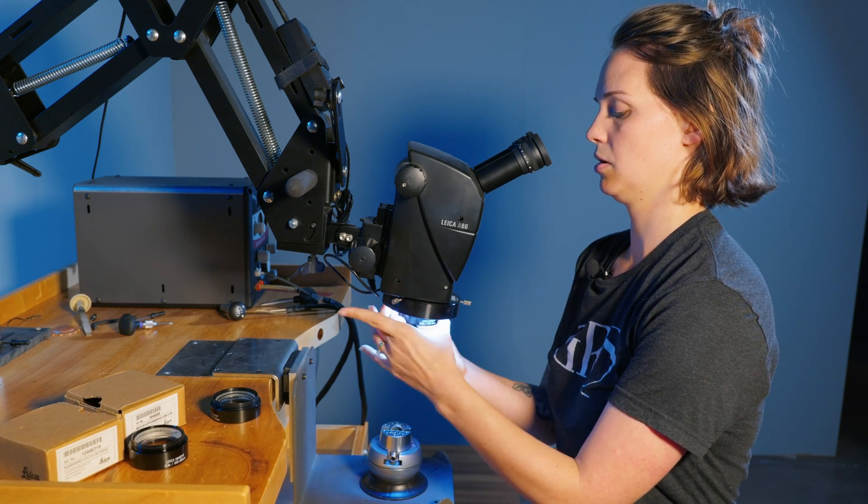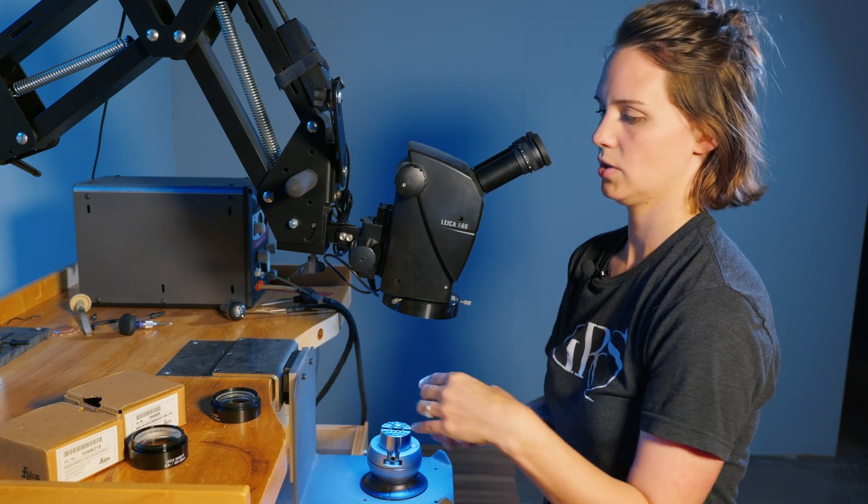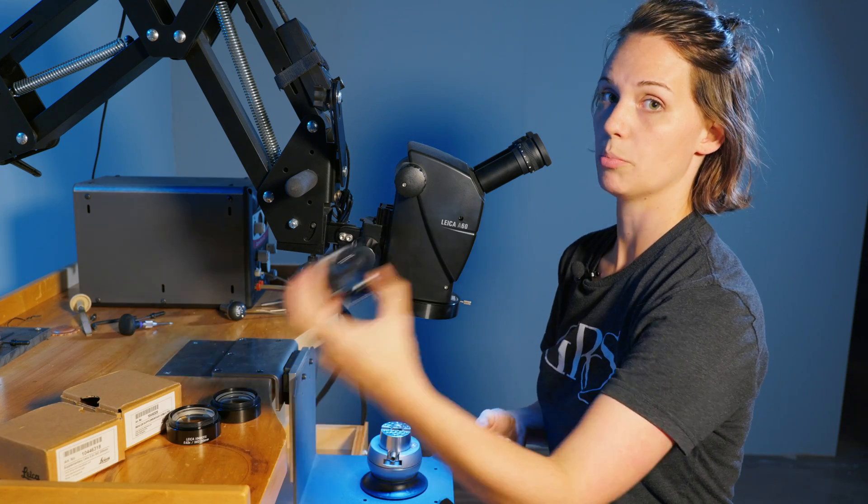If you need an even larger field diameter or you have large tools that you need to get under your microscope, you can bump up to the next option which is the 0.5 lens. This is going to jump us up to almost eight inches for a working distance.